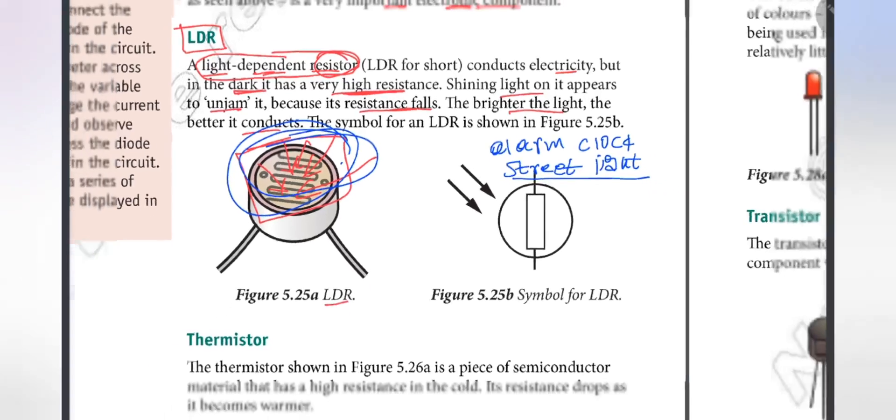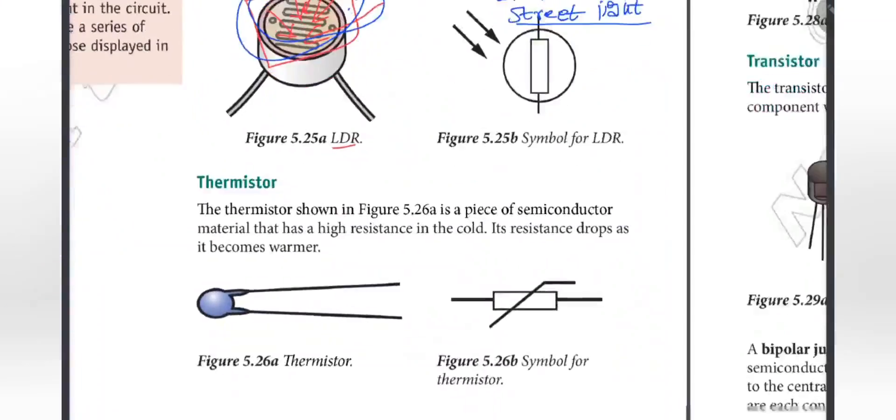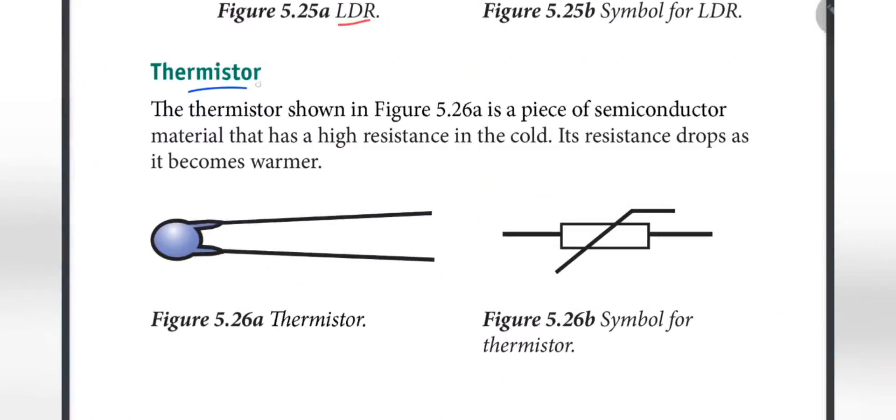The thermistor is a piece of semiconductor material that has a high resistance in the cold. This is high resistance in the cold. Its resistance drops as it becomes warmer.